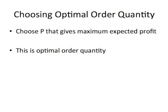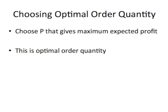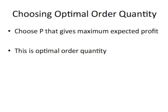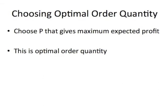To solve the news vendor problem by hand, you would have to calculate the expected profit for each order quantity and choose the order quantity that results in the highest expected profit. This is a very labor-intensive process, and there is a much more efficient way of solving the news vendor problem that will be showcased next.